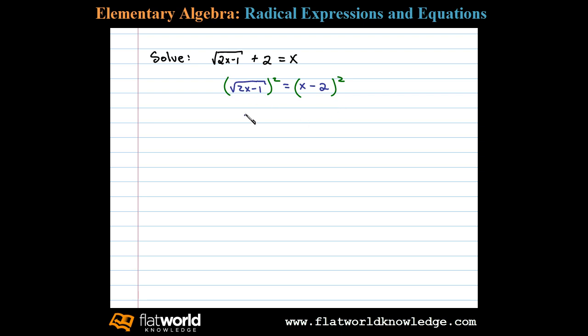On the left side we're left with the argument here 2x minus 1 equals. Now when you square this binomial we'll be left with x squared minus 4x plus 4.